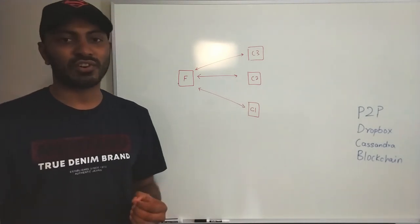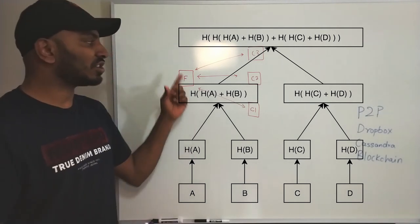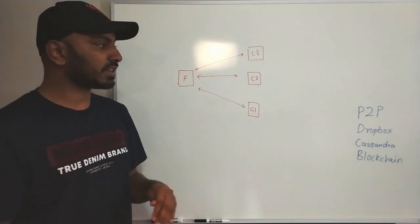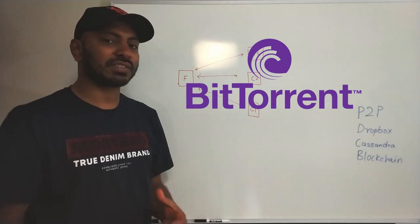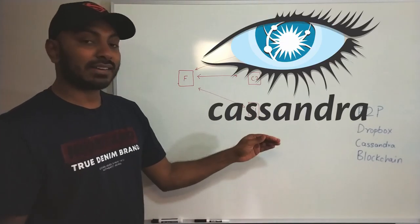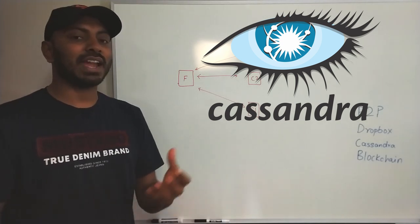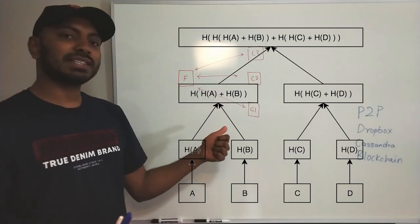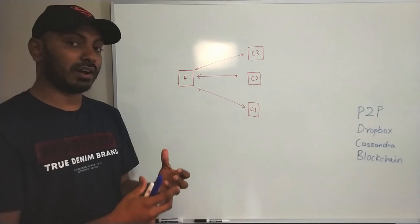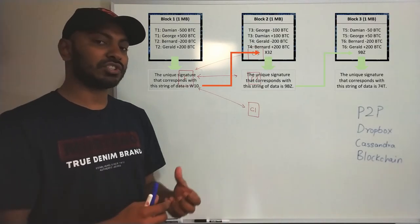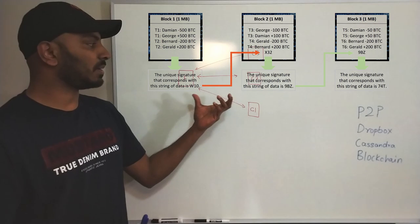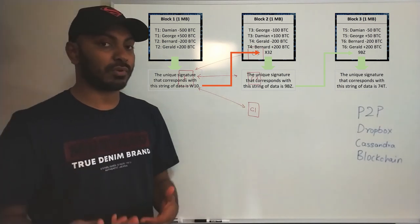We are going to discuss an interesting data structure called the Merkle tree, and using that we can actually solve all of this problem. A lot of interesting distributed systems use Merkle trees. For example, peer-to-peer networks like BitTorrents use Merkle trees to fix all of this. Dropbox-like solutions can also use Merkle trees. Cassandra uses a tool called the Anti-Entropy Repair Tool in which Merkle trees fix out-of-sync replicas. Blockchain uses Merkle trees to verify transactions without downloading the entire blockchain data.